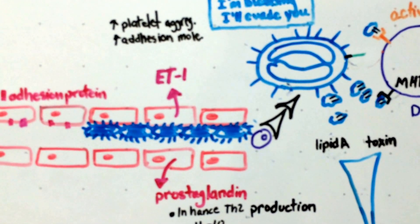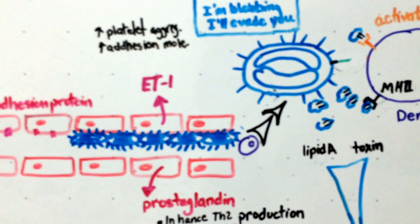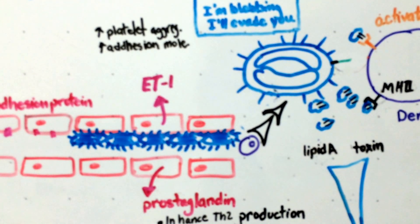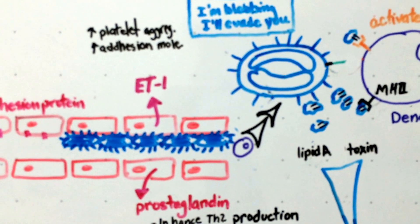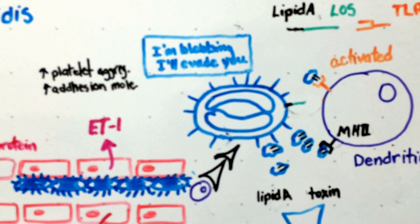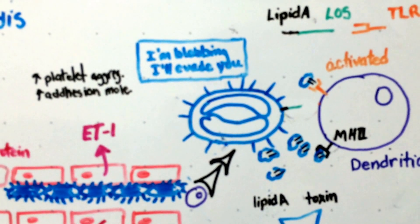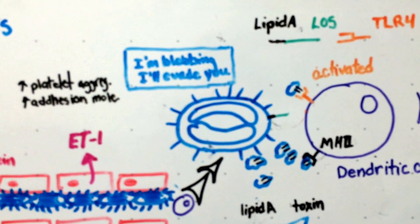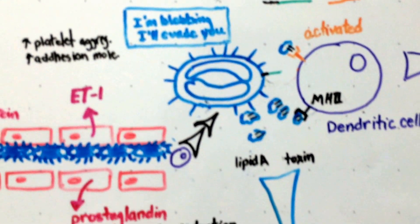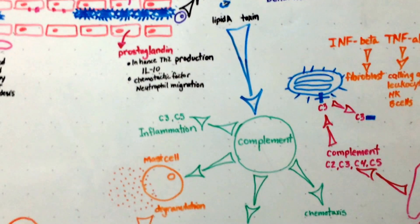And that's something that you see throughout every process: vasodilation, vascular permeability, inflammation, leaky vessels. So our bacterium is blebbing. You can see that the lipid A is being released in those blebs and that's a toxin. And it's activating our complement system.